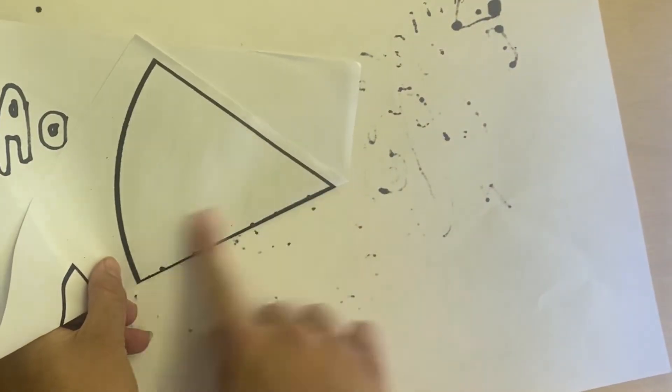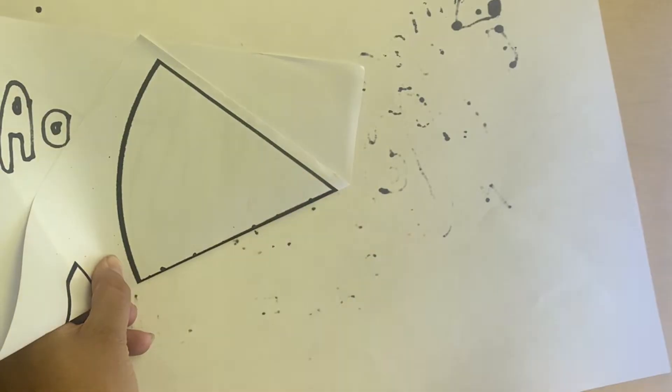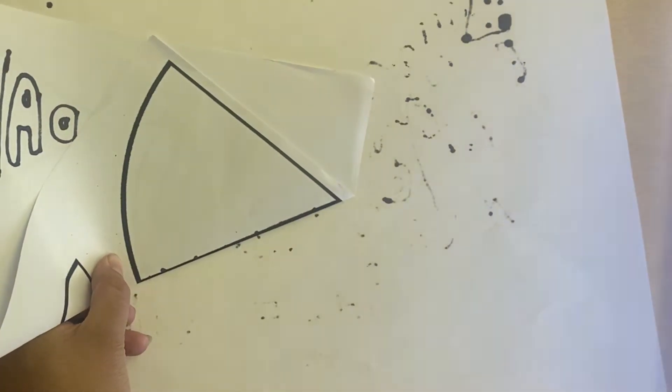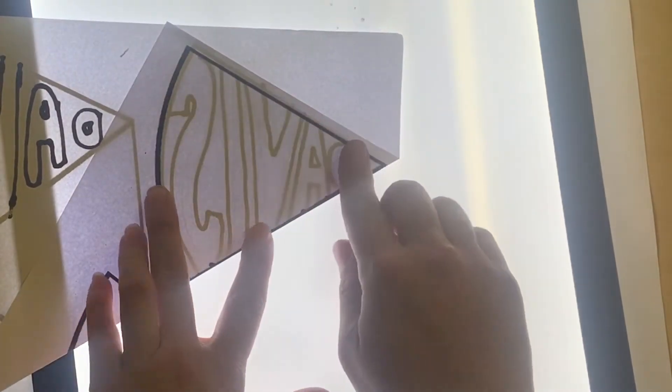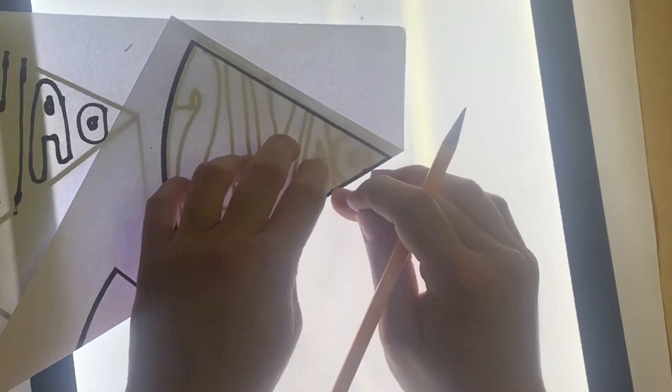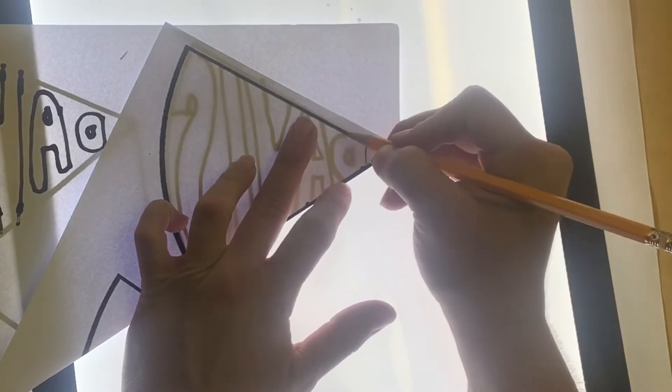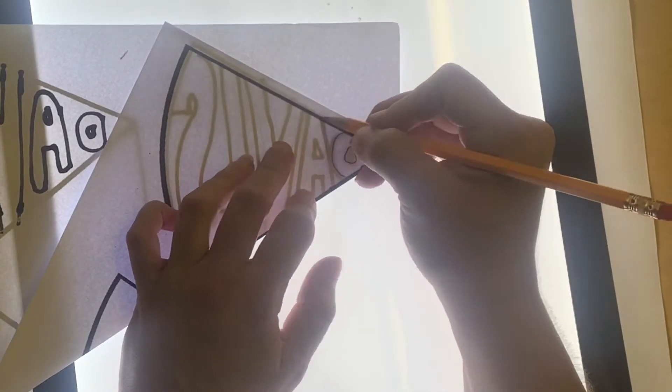You're going to flip it over and you'll see a backwards version of your name. If it's hard to see, we have a light panel. You could also use a window. And now you can see where I have to trace with pencil. I'm going to trace my backwards D, then A.